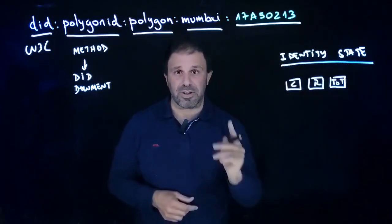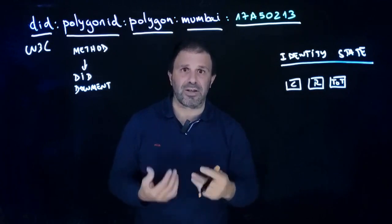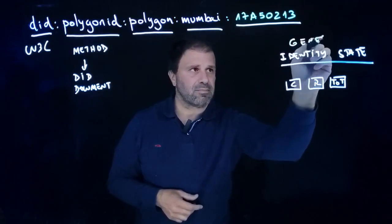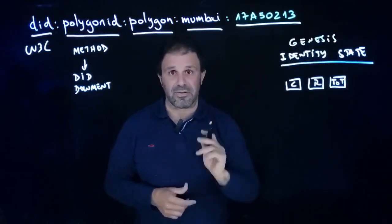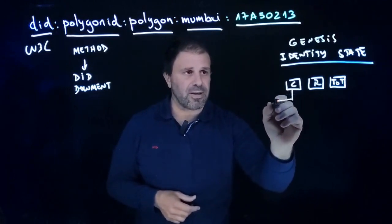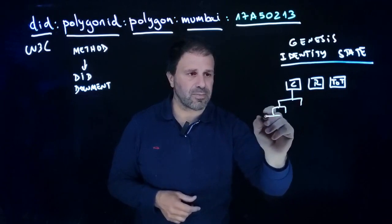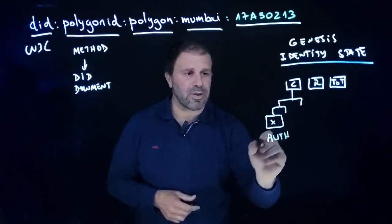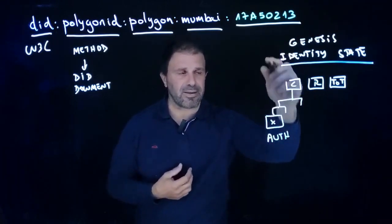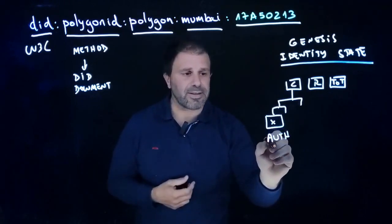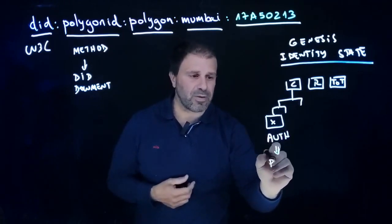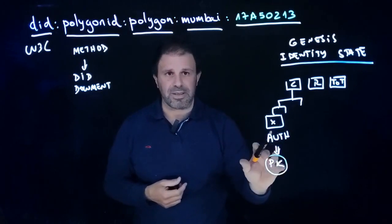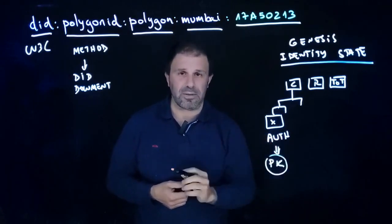There is a special identity state, which is the first one — it's the identity state of the creation of the identity. The way the genesis identity state is created, that is the first identity state, is by creating one single claim in this tree. And this claim, which is the auth claim, is a self-claim. It's something that the identity holder is saying about himself — specifically: I am in control of this private key.